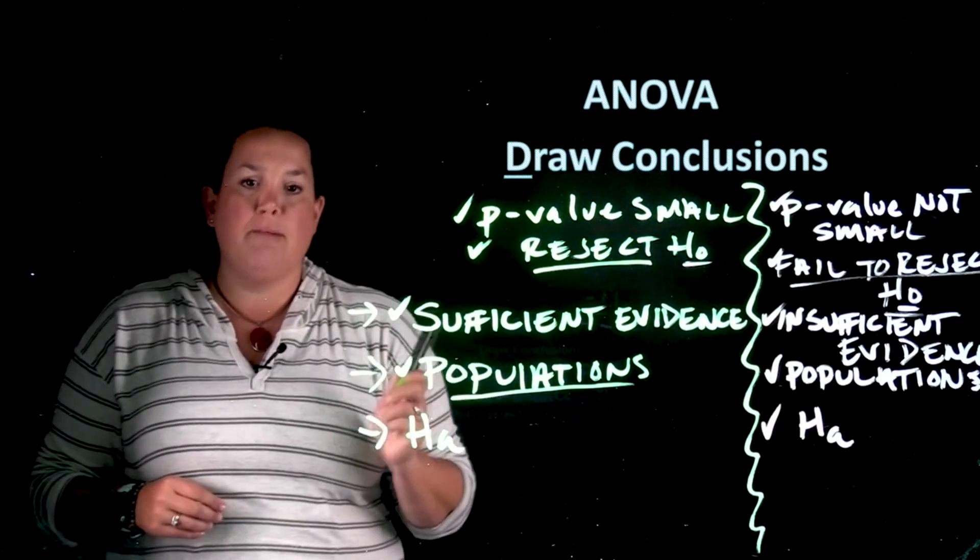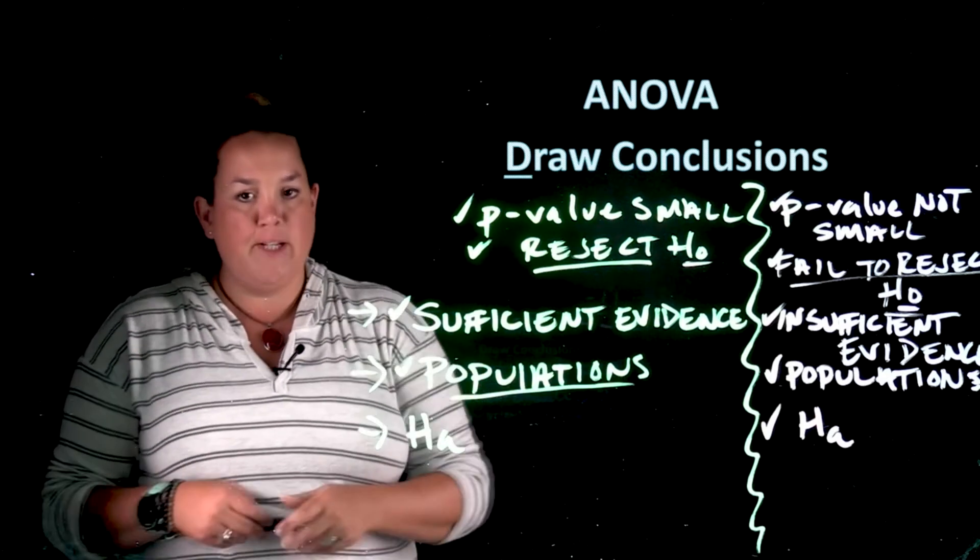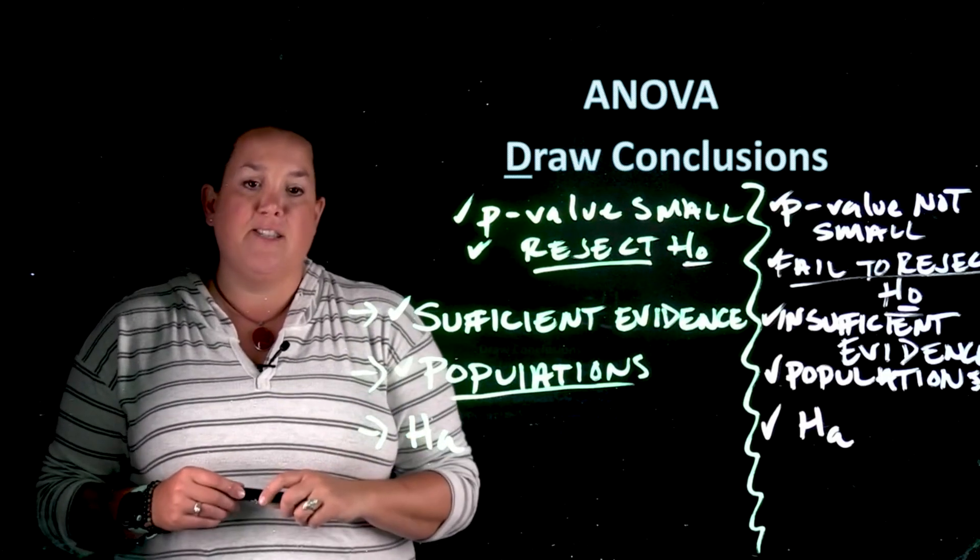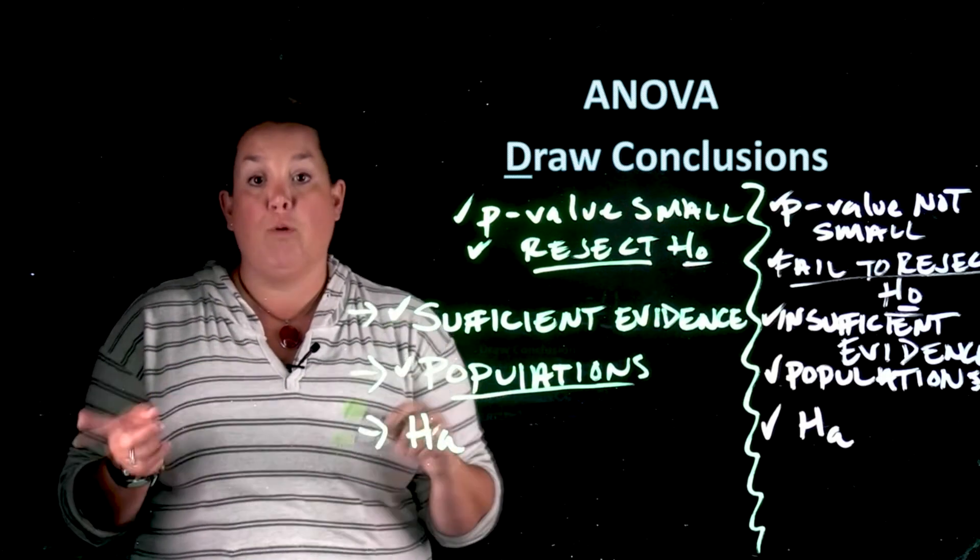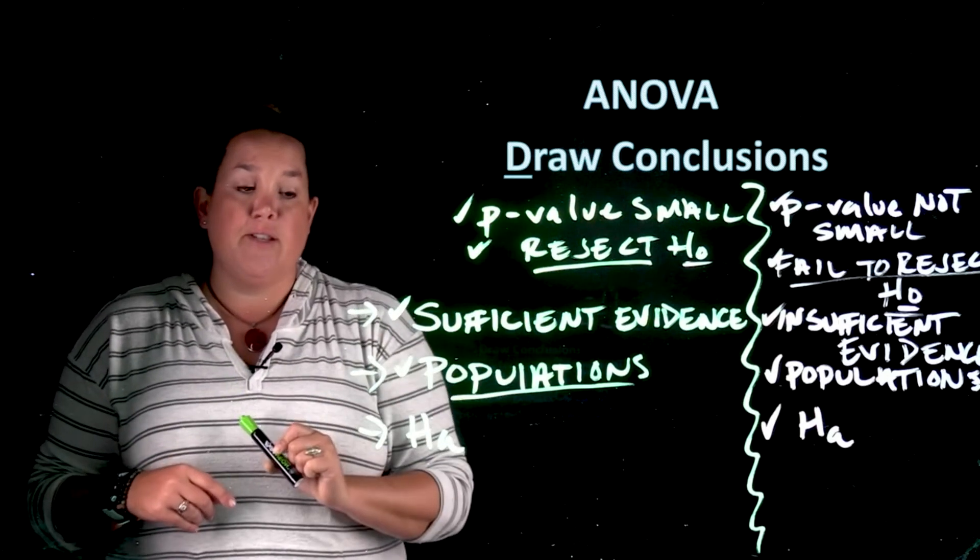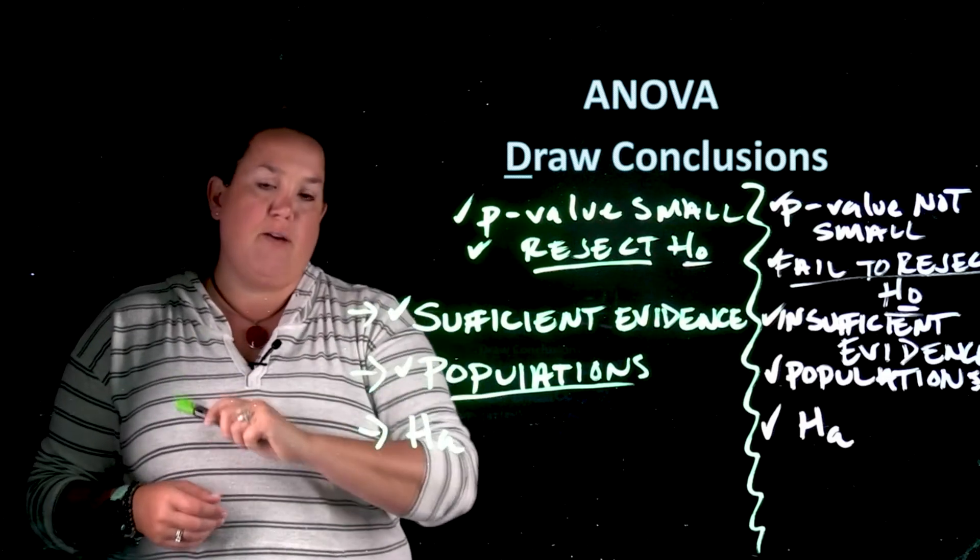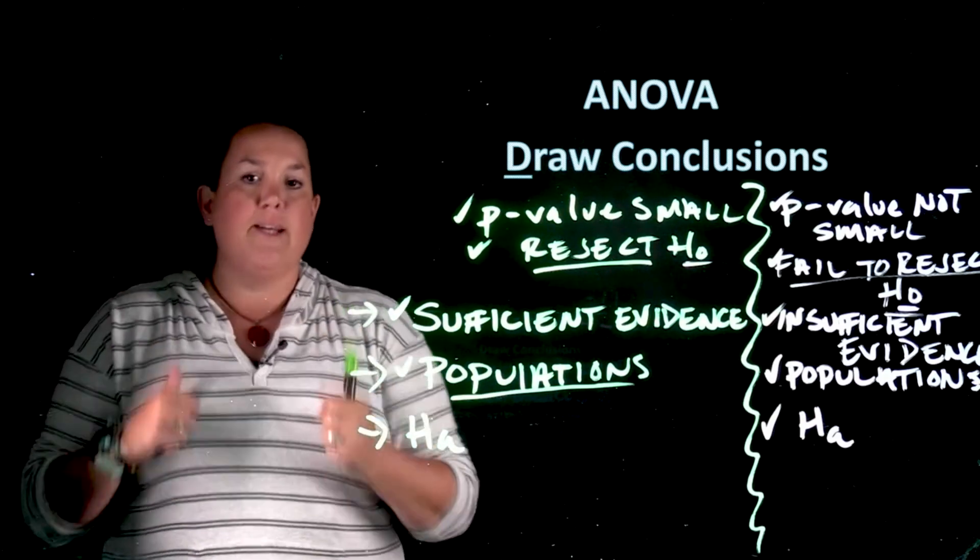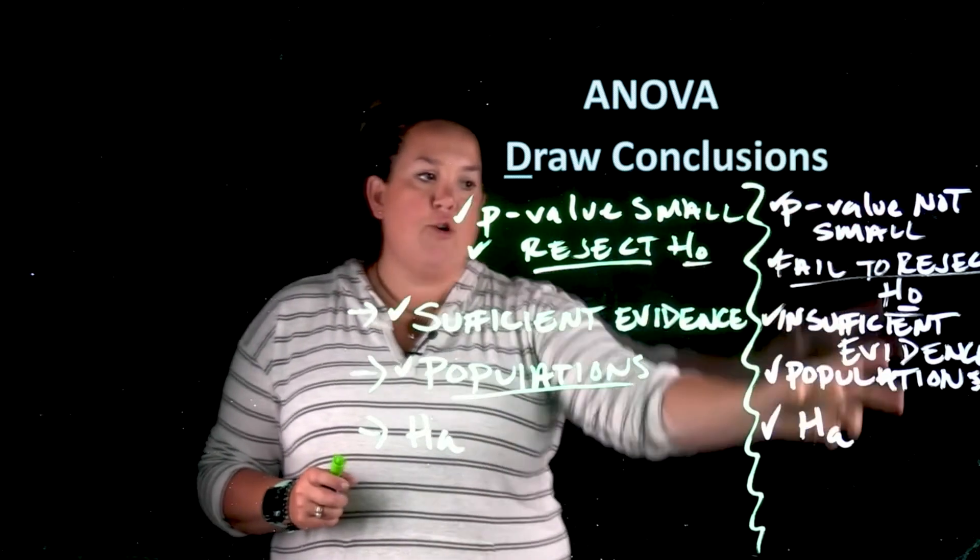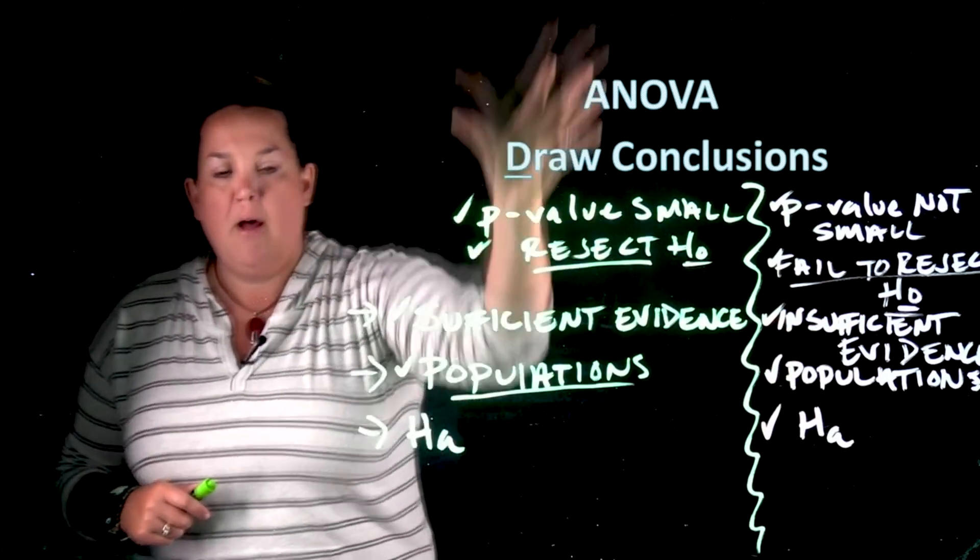Remember with these types of problems, the next thing you do if you see that there's sufficient evidence is that post hoc analysis to see where the difference is or which group does differ. For right now, if you see that there's evidence for a difference, all you can say is there's sufficient evidence to suggest that for these populations at least one mean differs. And here you might say insufficient, and so you would not do a post hoc with this, but here you would.